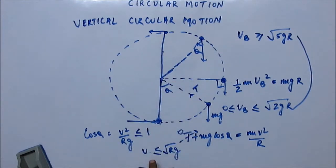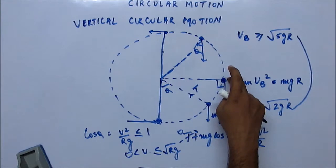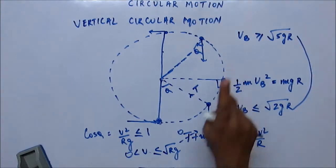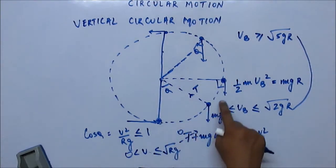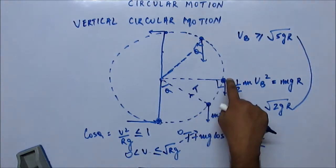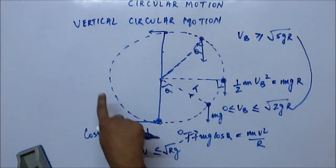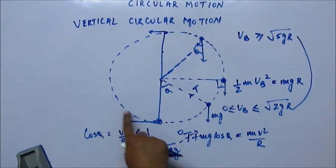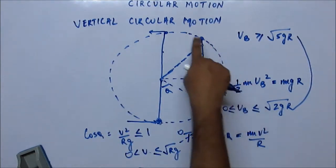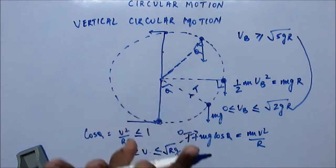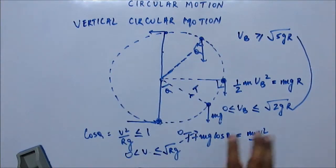When velocity equals √(Rg) it has reached the top; when velocity is 0 it stays at the bottom. If the bob starts and stops at any point below the horizontal line, it will come back down and oscillate. But if it crosses the horizontal line and does not reach the top, it will not return along the circular path — it will leave its trajectory.